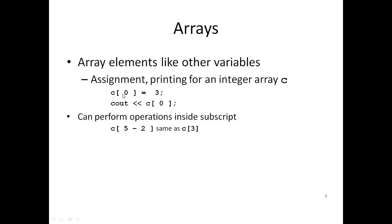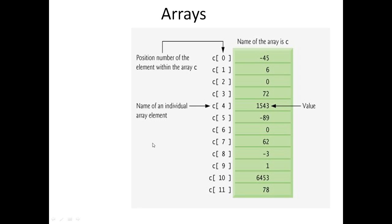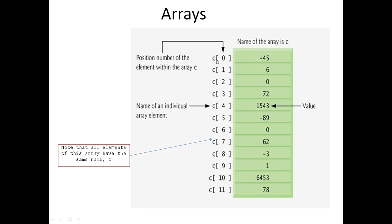You can also assign values individually — for example, c[0] through c[3] can be assigned or output. This array starts from index 0 to 11, meaning 12 elements. Each element must be the same value type — here it's integer, so you can put positive and negative values including zero. All elements share the same name but have different positions, identified by an index.